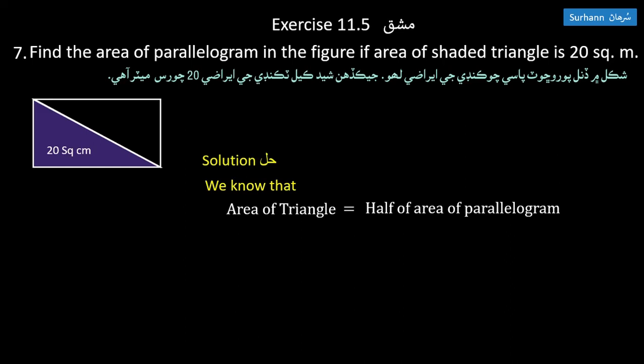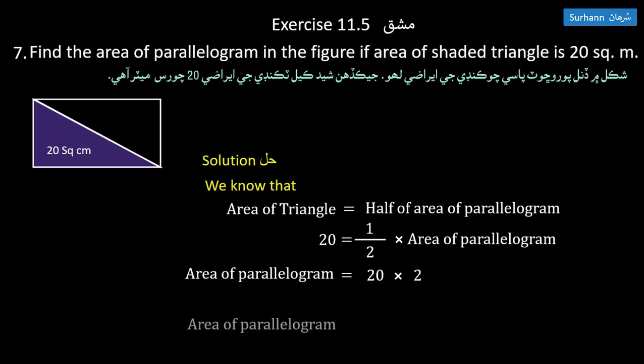Area of triangle equals half of area of parallelogram. Since area of triangle is 20, then 20 equals half of parallelogram area. Multiply by 2: area of parallelogram equals 40 square meters.